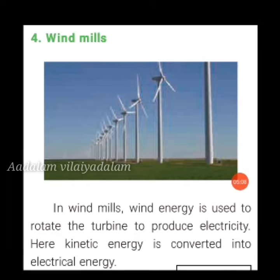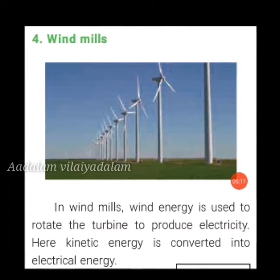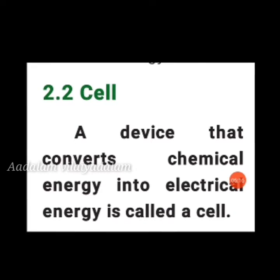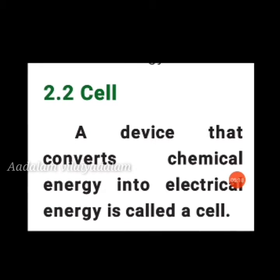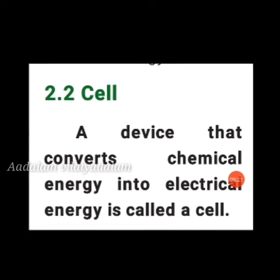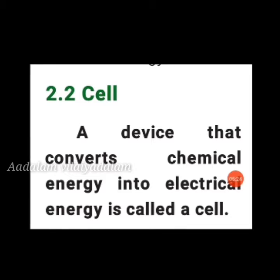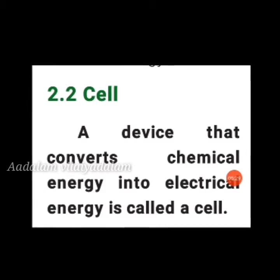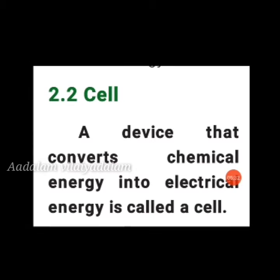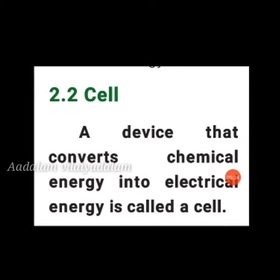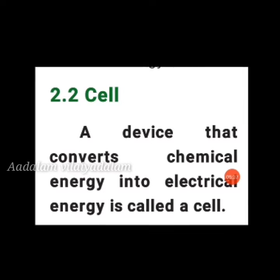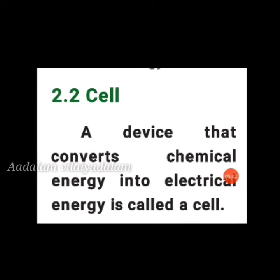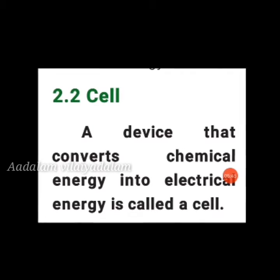Our second topic is the cell. A device that converts chemical energy into electrical energy is called a cell. Apart from large power stations, we also get electricity from cells and batteries.